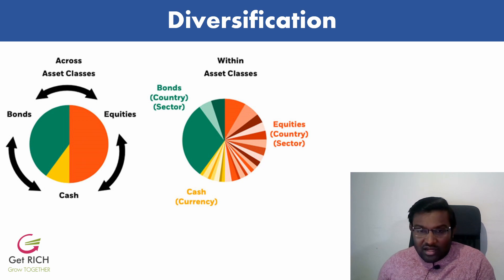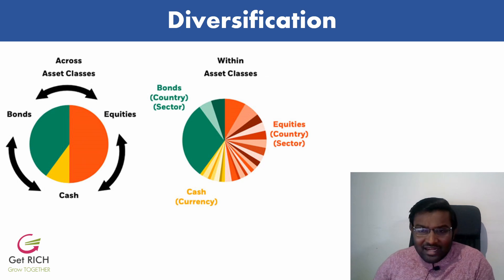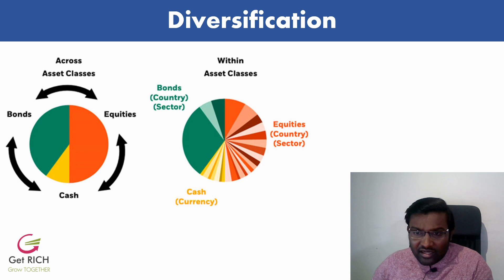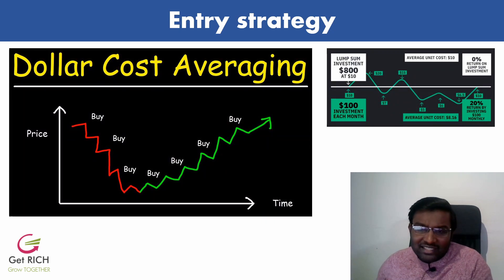Sectors should not be positively correlated — for example, if financials fall, NBFCs may also fall, so those cannot be considered true diversification. You need sectors that act as uncorrelated assets. The second layer of diversification is market-cap-wise: put some in large cap, some in mid cap, and some in small cap.